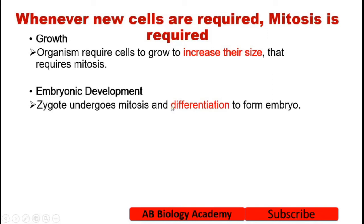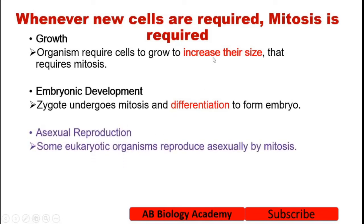If you don't know what differentiation is — simply, stem cells differentiate into different cells. For example, stem cells in the blood give rise to various types of cells. That is called the process of differentiation: one cell gives rise to so many types of cells. Differentiation is very important in embryonic development.